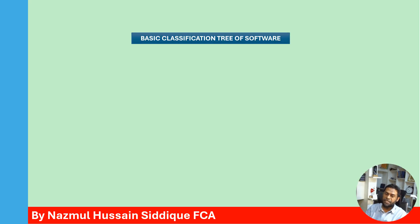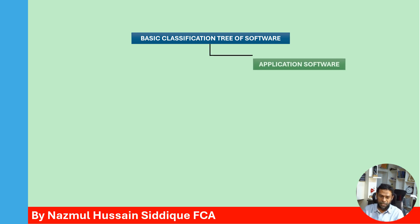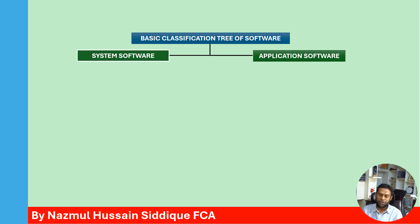We shall now discuss the basic classification tree of software. Usually software is categorized in different ways for different purposes. However, this tree will show the basic classification of software. Mainly there are two types of software: application software and system software.